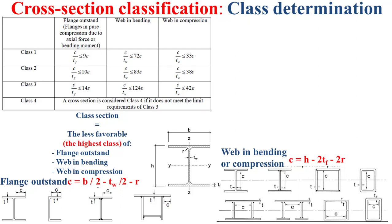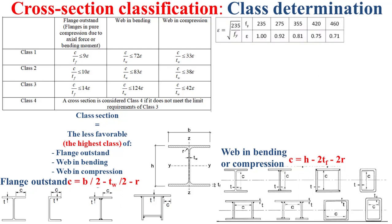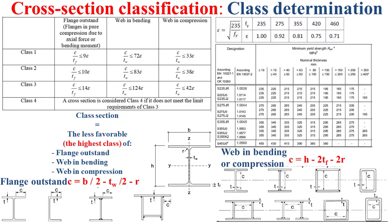For the determination of epsilon: epsilon is determined as the square root of 235 divided by Fy, where Fy is the yield strength of the material. The yield strength depends on the material and also on the nominal thickness, as indicated by the table of minimum yield strength shown on the right of this slide.